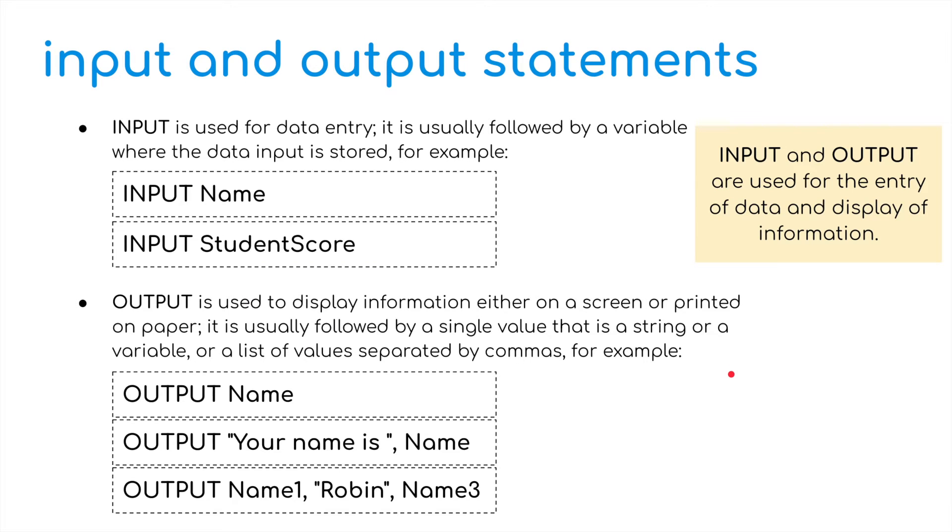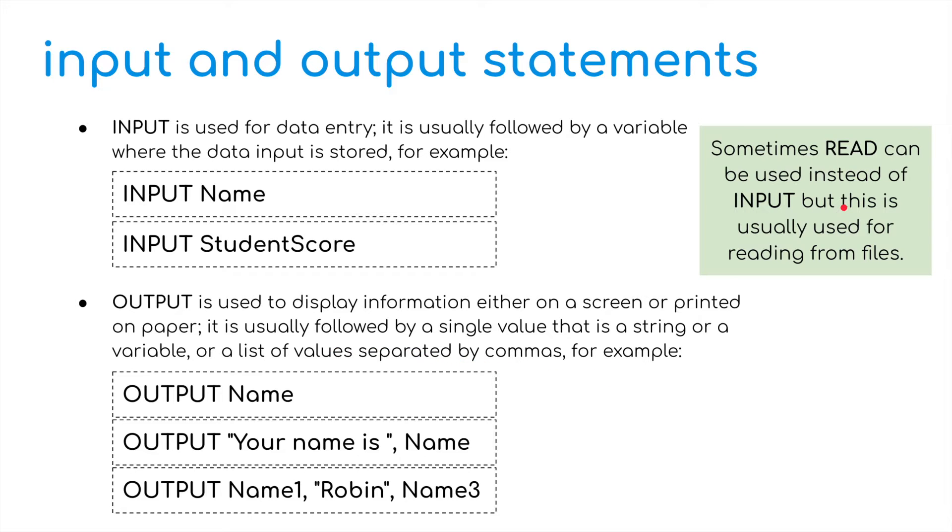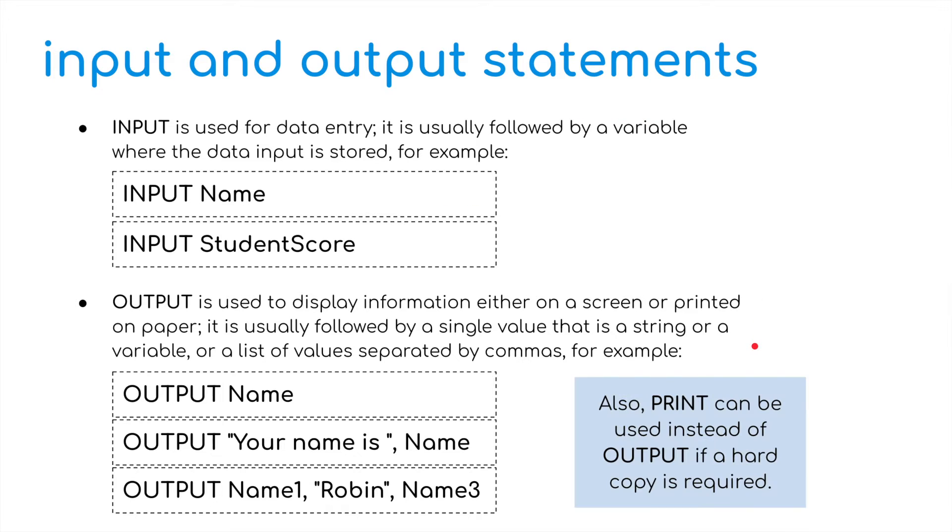So let's start with input and output using pseudocode. Input and output are basically used for the entry of data, inputting information into the program, and output is for getting information onto the screen or to print something onto paper. We can use the word read in pseudocode rather than the word input and we can also use print rather than the word output in pseudocode as well.